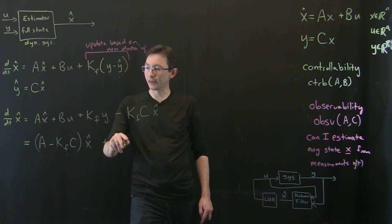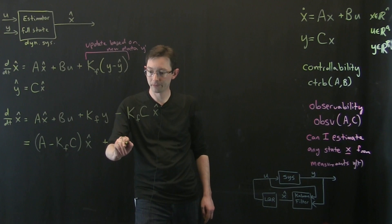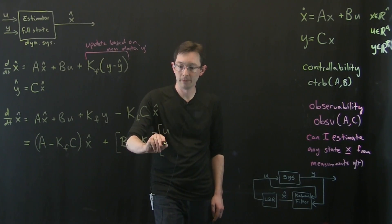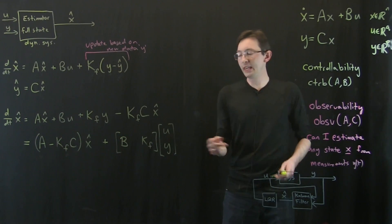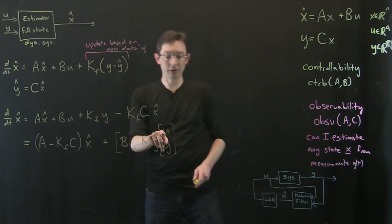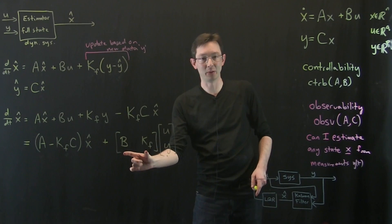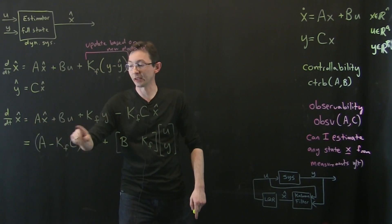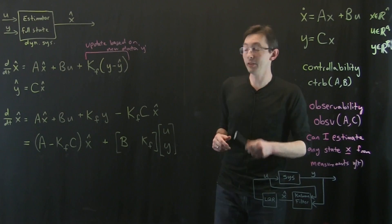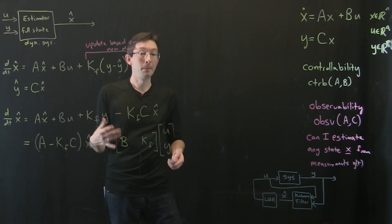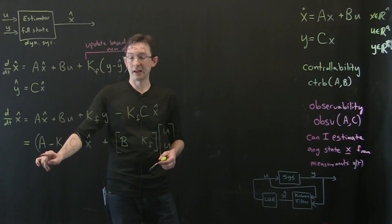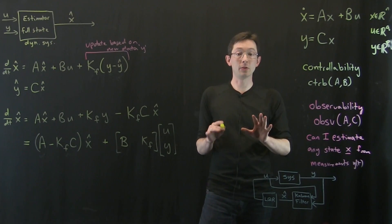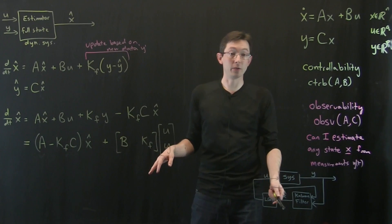So this should look a lot like the full state feedback equation. I'm going to try to change the eigenvalues of this by choosing my filter gains. Plus, I'm going to write this in the following way - this is B KF times U Y. So these are the inputs to my full state estimator. U and Y are the inputs to my estimator. This is my input matrix, my new B matrix for this system. And this is the dynamics, the dynamics of X hat. And what we want to do is we want to make these dynamics stable. And I'm going to show you in a minute that if these dynamics are stable, then X hat will stably converge to X.